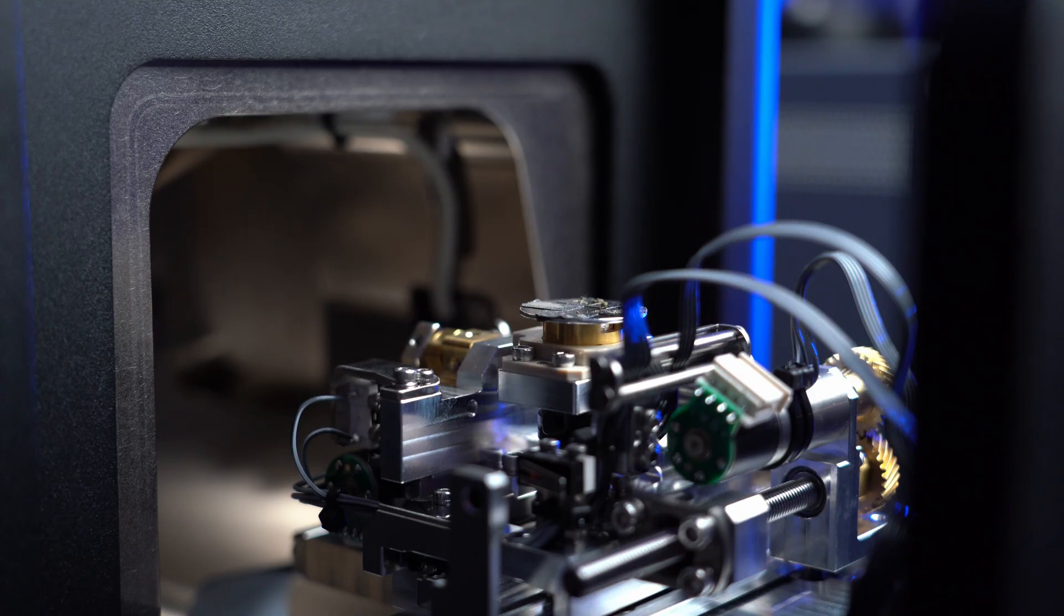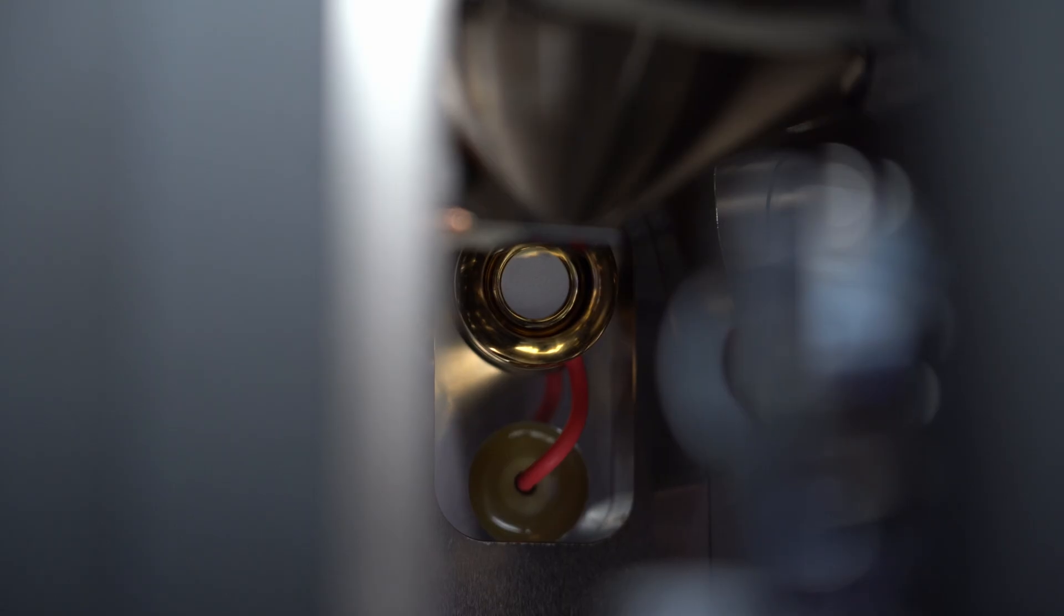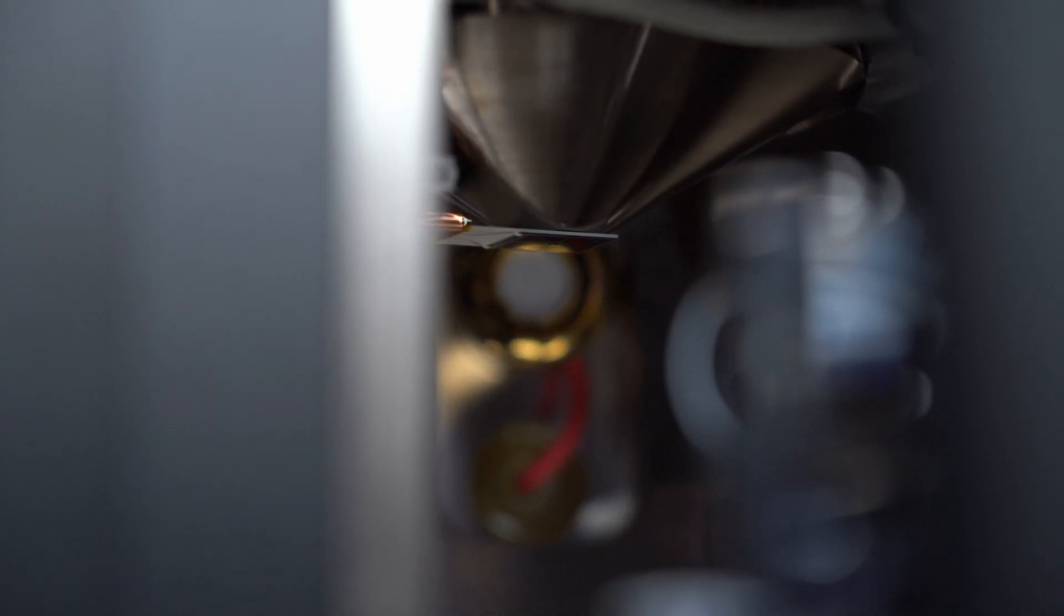So the upper part of the microscope forms an electron beam of correct shape, diameter, focus and deflects it to the desired point of the sample. The bottom part of the microscope is a sample chamber with motorized 5-axis stage and detectors that determine the flow of electrons and form a signal.